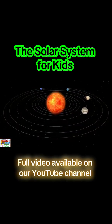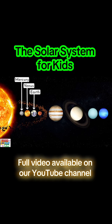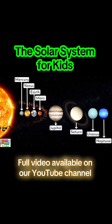There are eight planets that orbit the Sun. The order of the planets in our solar system starting at the closest to the Sun is Mercury, Venus, Earth, Mars, Jupiter, Saturn, Uranus and Neptune.